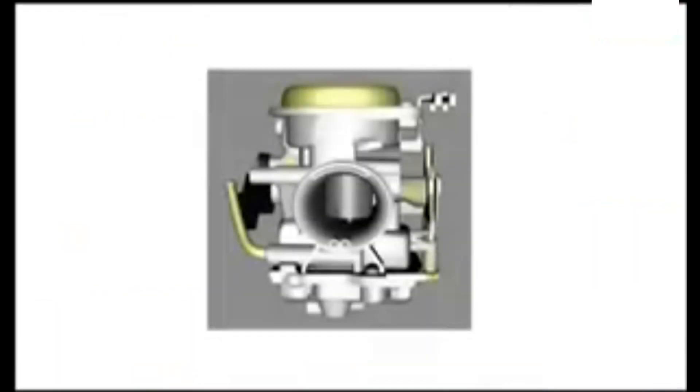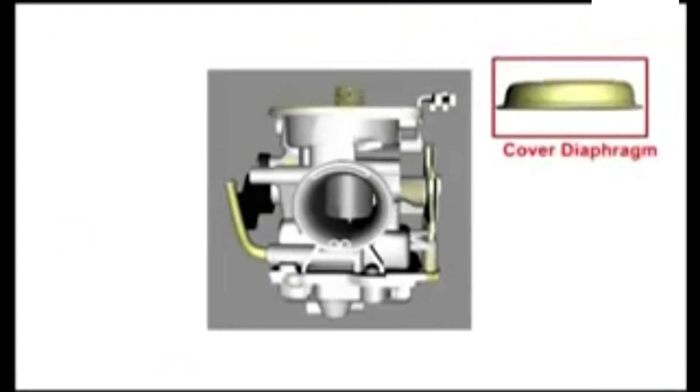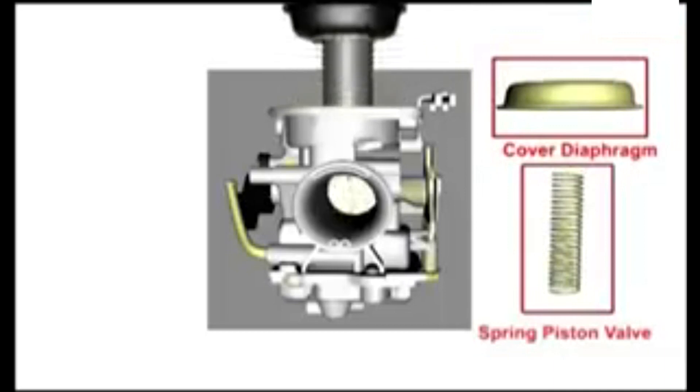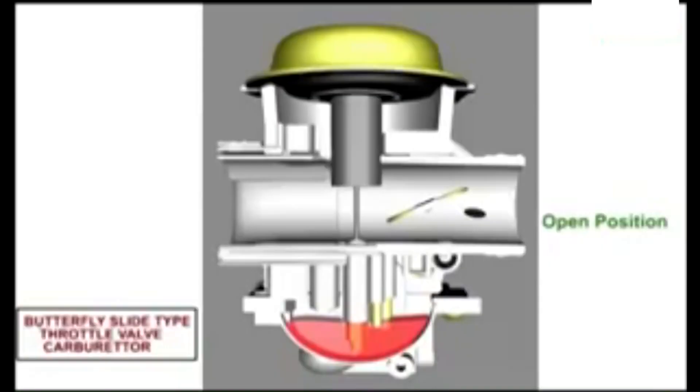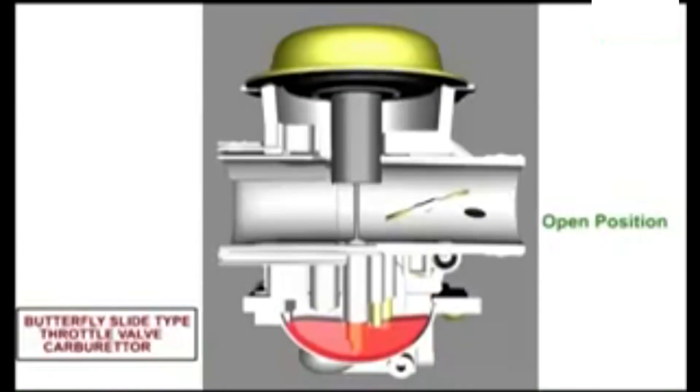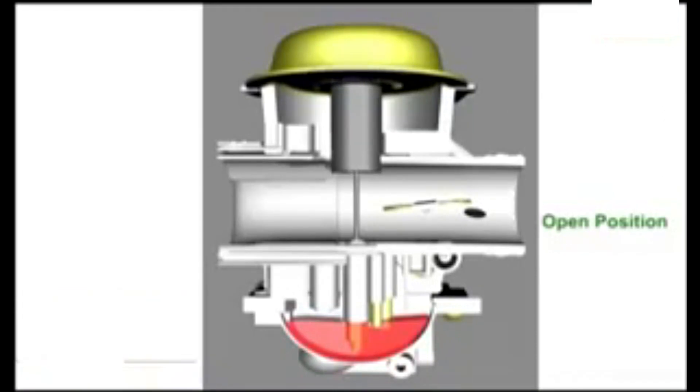The parts that are unique to a BS or CV style carburetor are the diaphragm cover, the spring, and the diaphragm slide and jet needle assembly. Some symptoms of a faulty diaphragm can be sluggish performance, erratic throttle response, and poor wide open throttle or high speed performance.